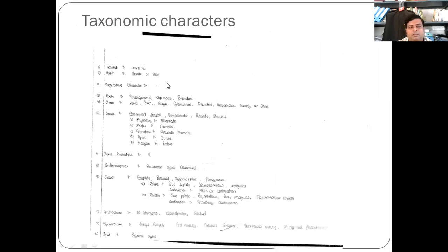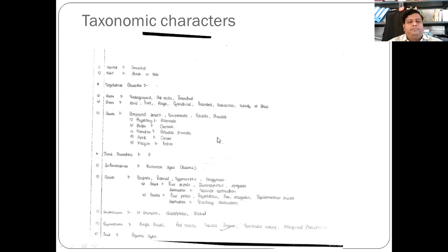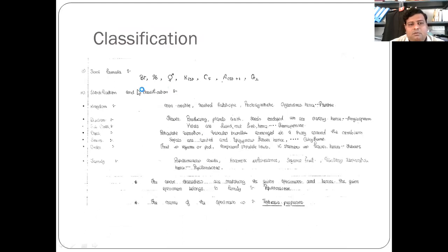Taxonomic characters of Tephrosia: it is terrestrial, habit shrub or herb. Vegetative characters — roots underground, taproot, branched; stem aerial, erect, rough, cylindrical, branched, herbaceous, hairy; leaves compound, unipinnate, petiolate, stipulate, alternate with reticulate venation, apex obtuse, margin entire. Floral characters — inflorescence racemose type; flowers bracteate, bisexual, zygomorphic; calyx 5, corolla 5, androecium 9 plus 1, gynoecium 1. Fruit is legume or pod type. Classification: Kingdom Plantae, non-motile autotrophic photosynthetic organism; Division Angiosperm — flower-producing plant with seed enclosed within ovary; Subclass Gamopetalae — petals fused not free; Class Dicot — reticulate venation, vascular bundles arranged around cambium; sepals united, epicalyx absent; family Papilionaceae — corolla racimose, vexillary aestivation, legume fruit, compound leaves with stipules present.